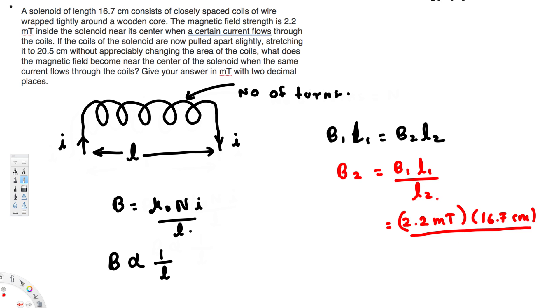So in the bottom we are going to have L₂, the new length, that is 20.5 centimeters. Okay, from this one you can see that centimeter cancels, the only unit left is millitesla. And if you calculate this value, you should get 1.79 millitesla, and that's going to be the new magnetic field. And that's how we do this kind of problems. I hope this helps, thanks for watching.